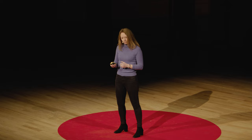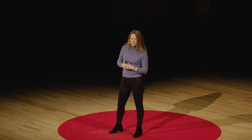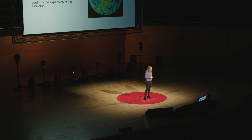Even by the 1950s and 1960s, people were finding ways to rescue the steady state idea. This was pretty much dropped by the discovery of Penzias and Wilson of the cosmic microwave background in 1964. They discovered it by accident, but found that throughout the universe there's this background radiation. It originates from the time when atoms were first formed in the universe. The existence of this radiation confirms that the universe must have been much smaller in the past, and is getting bigger and bigger as time goes on.